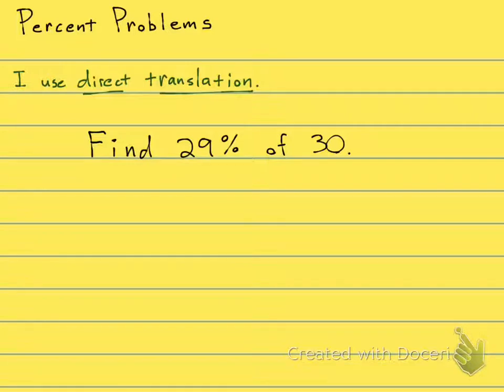Okay, so you're probably thinking mathematically now. 29% is 0.29, of means multiply, and 30 is 30.